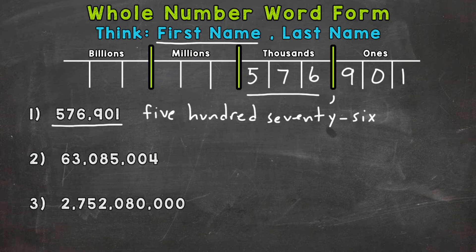Now, last name, we take a look at what period that number's sitting in, and that's going to be the last name. So 576 thousand.